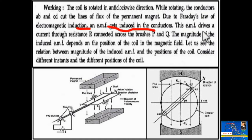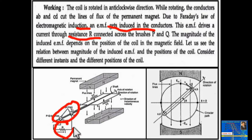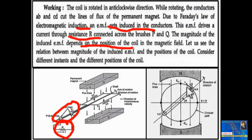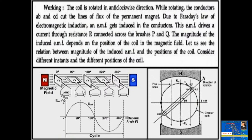This EMF drives a current through the resistive load connected via brush and slip ring. The magnitude of the induced EMF depends on the position of the coil. As the coil rotates, it traverses different angles. Let us see the relation between the magnitude of induced EMF and the positions of the coil. The coil is rotated in anti-clockwise direction.